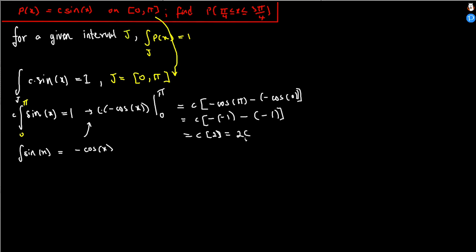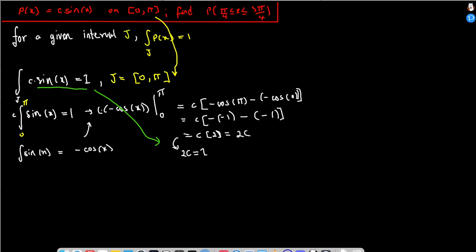That works out to c times 2, so 2c. We know the whole integral must equal 1 by the normalization definition. So 2c equals 1, and therefore c equals 1 half.